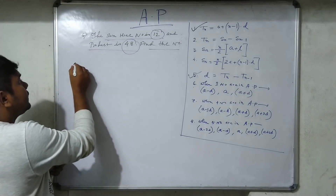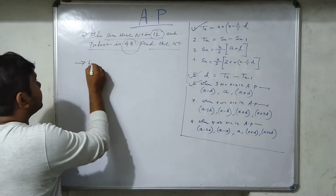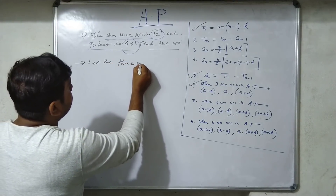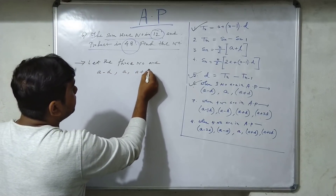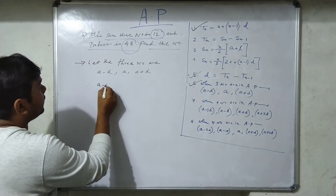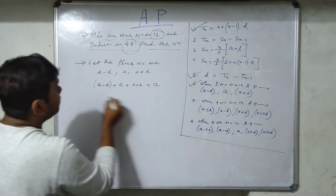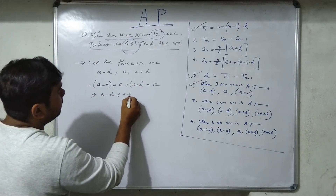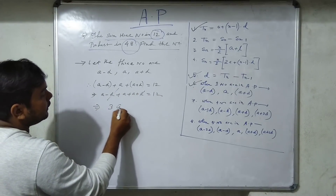Let the three numbers in AP be (a - d), a, and (a + d). For the sum: (a - d) + a + (a + d) = 12. This simplifies to 3a = 12, therefore a = 4.